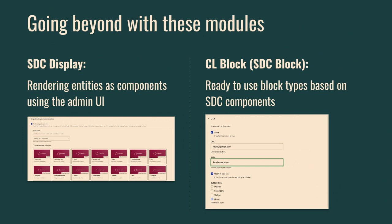Switching topics a bit — in this process of working with single directory components, we found some other modules that can help with this integration. The first module I recommend is SDC Display, because it allows you to render your entities as components using the admin UI, the Manage Display tab in entities. As a developer, that's really great because you may think: why not just replace the Twig template and send the variables? Because by doing that you cannot use formatters and other cool Drupal things. With SDC Display you can still use formatters but also use single directory components, and it has a nice UI to do all of this.